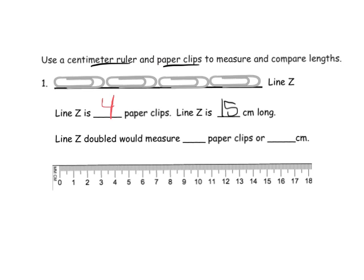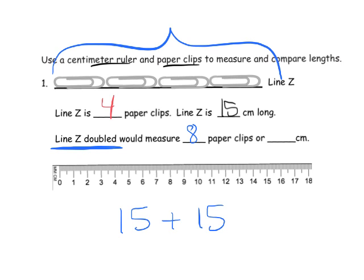And then the question says line Z doubled would measure. Okay, so if we were to have two of these line Zs, the first question is how many paper clips would that be? Well, four plus another four is eight paper clips, and 15 plus another 15. Now as your second graders, there's a lot of ways they could probably add that in their head. 10 plus 10 is 20, five and five is another 10, so that's 30 centimeters long.